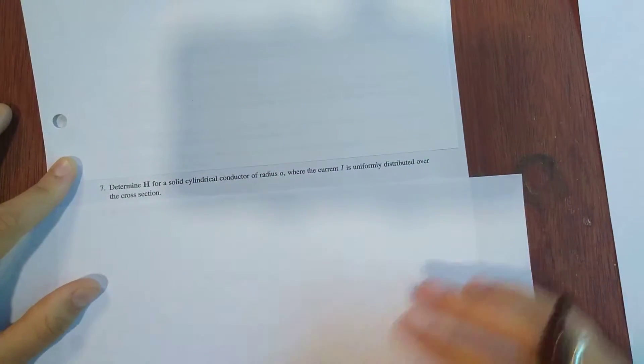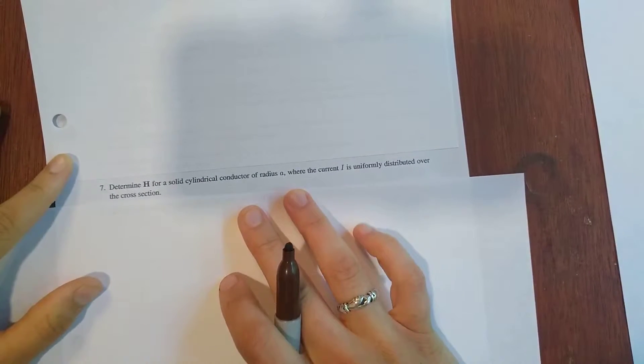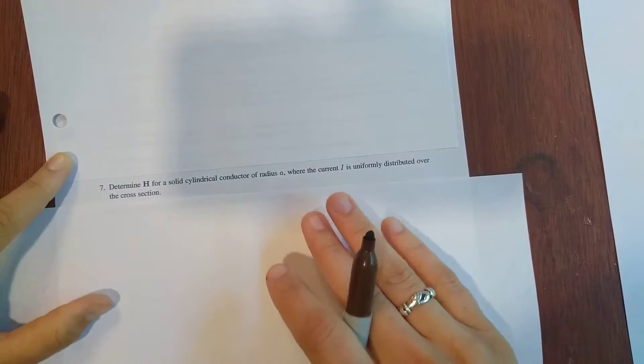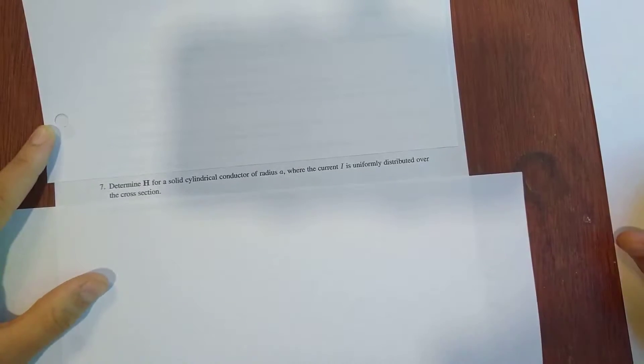Alright guys, we've got to determine the magnetic field for a solid cylindrical conductor of radius A, where the current I is uniformly distributed over the cross section.